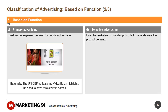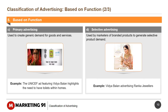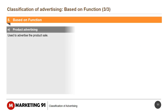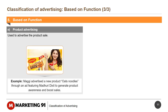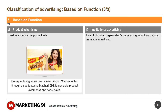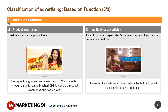Selective advertising is used by marketers of branded products to generate selective product demand. For example, Vidya Balan advertising Ranka Jewelers. Product advertising is used to advertise the product sale. For example, Maggi advertised a new product, Oats Noodles, through an ad featuring Madhuri Dixit to generate product awareness and boost sales. Institutional advertising is used to build an organization's name and goodwill, also known as image advertising. For example, Flipkart's most recent ads highlight that Flipkart sells only genuine products.